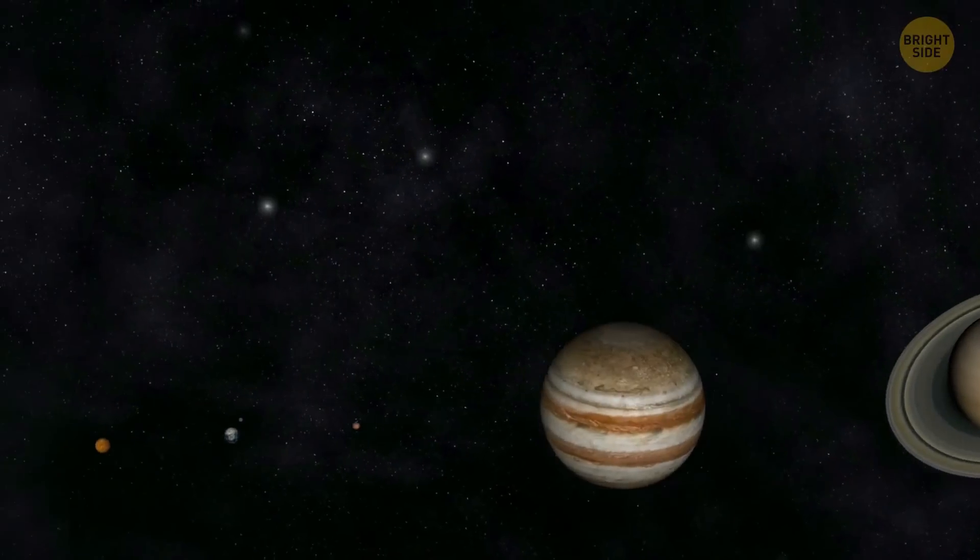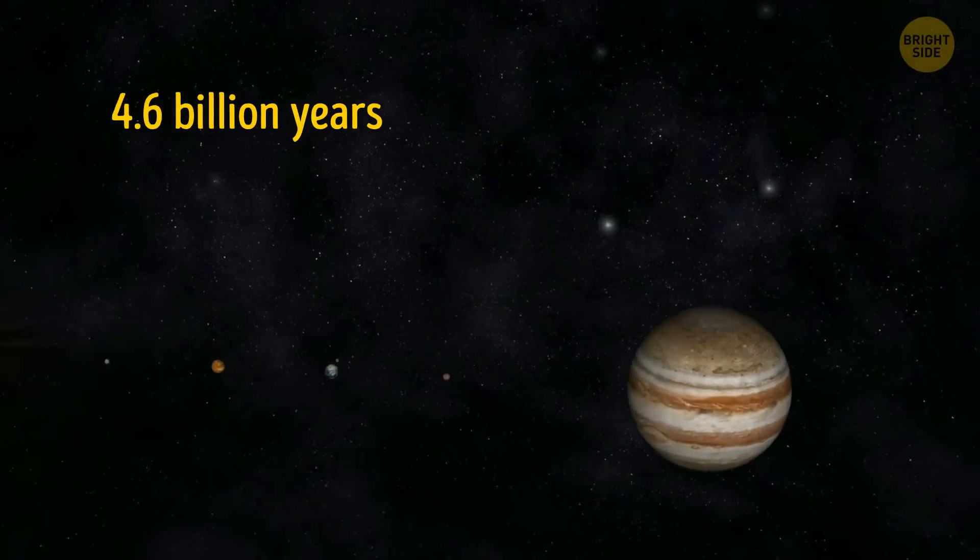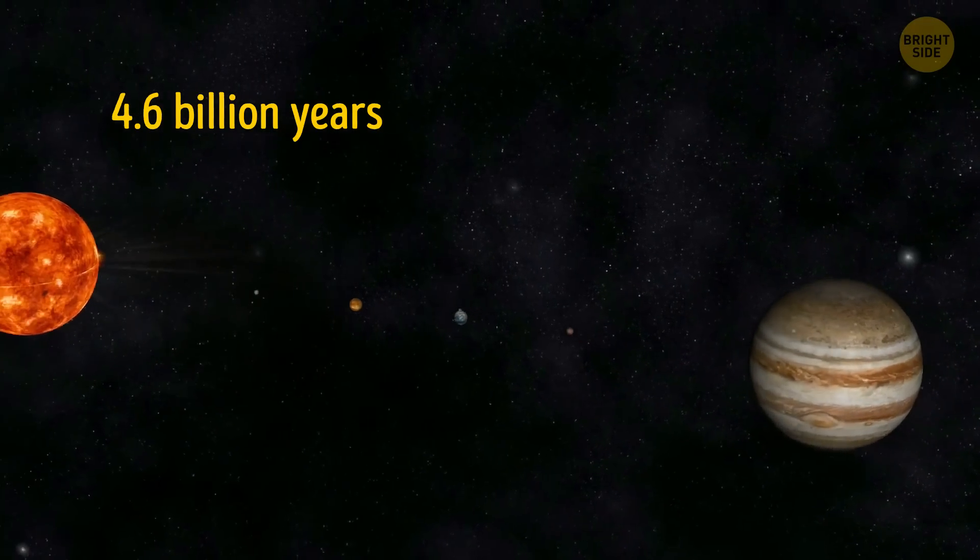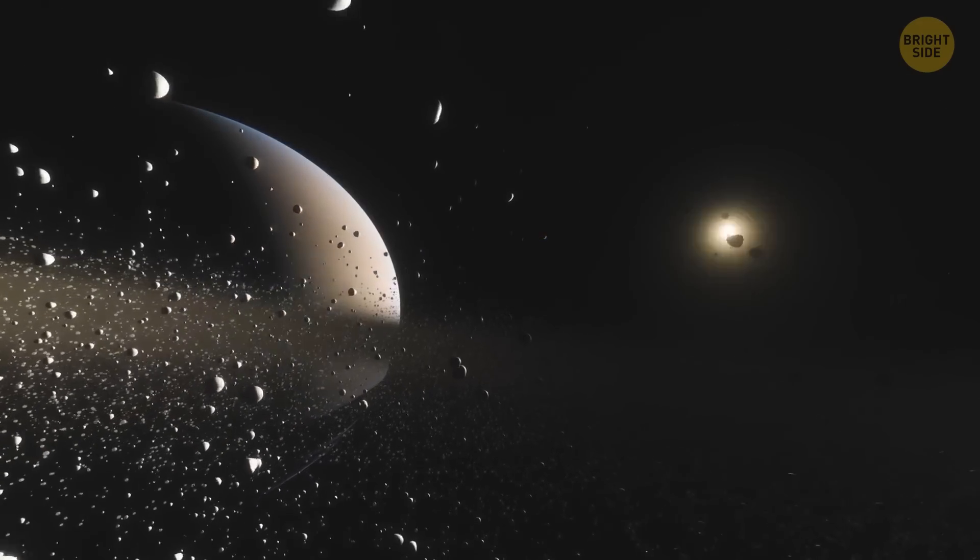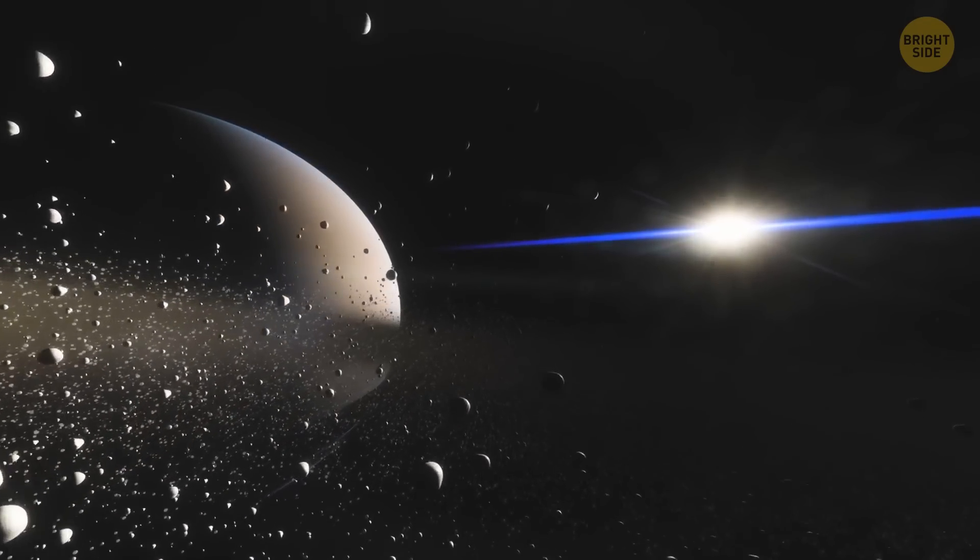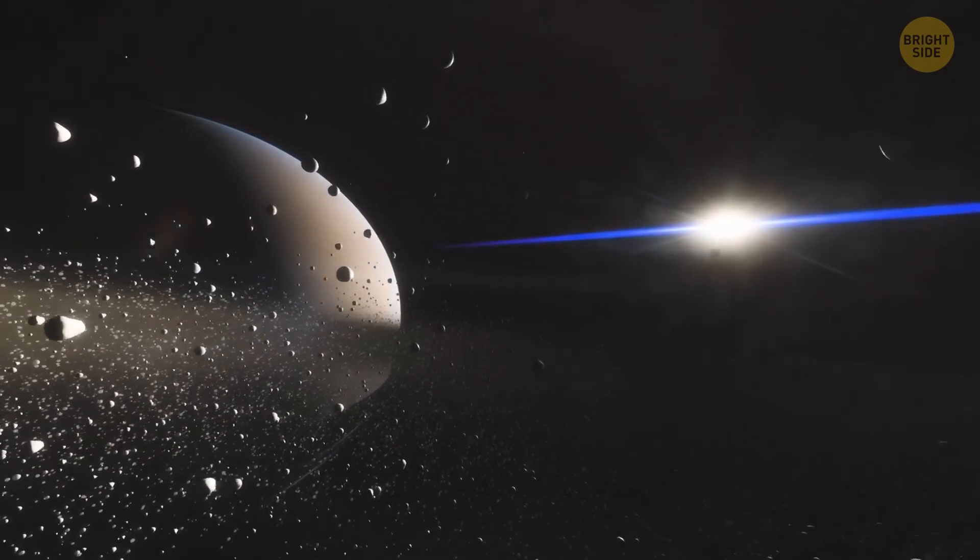The solar system is 4.6 billion years old. So old it's a senior solar system. Scientists came to this conclusion after they studied the oldest material they managed to get a hold of, and by that I mean meteorites, of course.